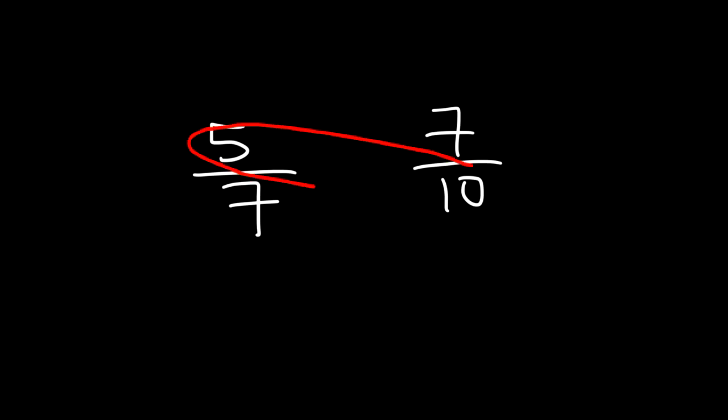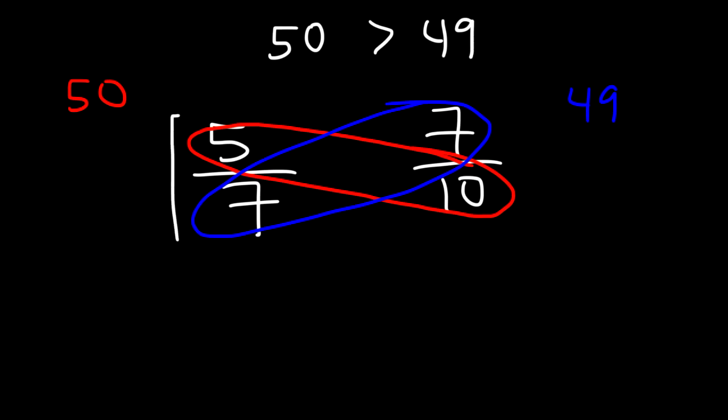And now let's work on one more example. 5 over 7 and 7 over 10. So go ahead and take a minute, pause the video, and determine which of these two fractions is greater in value. So let's begin with cross multiplication. 5 times 10 is 50. And 7 times 7 is 49. So we know that 50 is greater than 49. Which means 5 over 7 is the fraction that has the greater value.